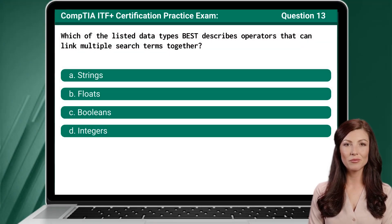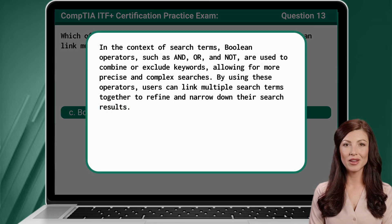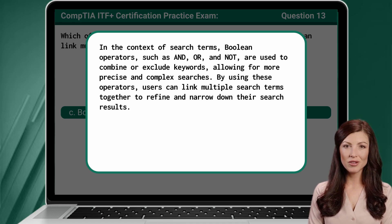Question 13. Which of the listed data types best describes operators that can link multiple search terms together? The answer is C: Booleans. In the context of search terms, Boolean operators — such as AND, OR, and NOT — are used to combine or exclude keywords, allowing for more precise and complex searches. By using these operators, users can link multiple search terms together to refine and narrow down their search results.